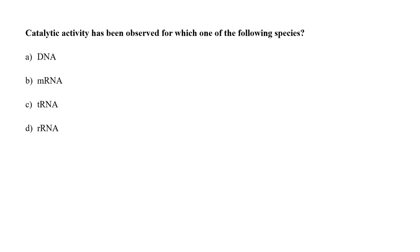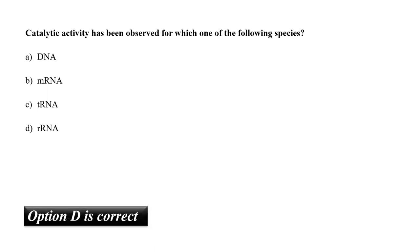Catalytic activity has been observed for which of the following species? A. DNA, B. mRNA, C. tRNA, or D. rRNA? DNA does not have a catalytic activity, which gives it stability. Among the RNAs mentioned, rRNA has catalytic activity and has played a key role in early evolution. So the correct answer is option D, rRNA.